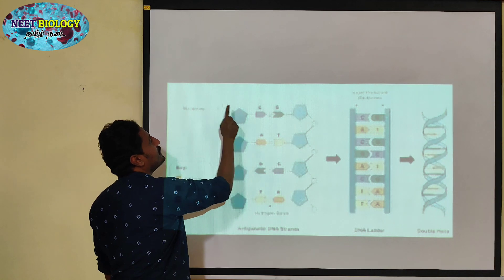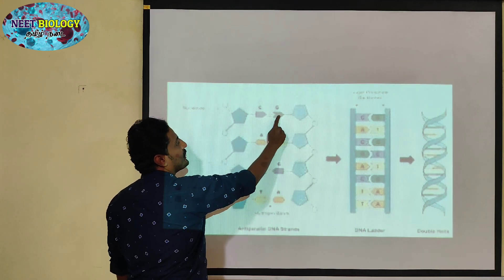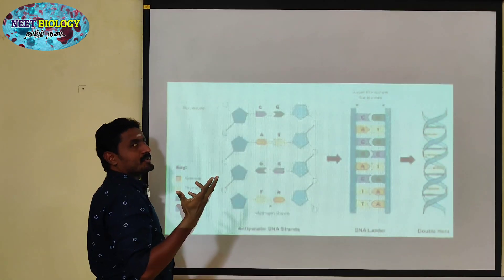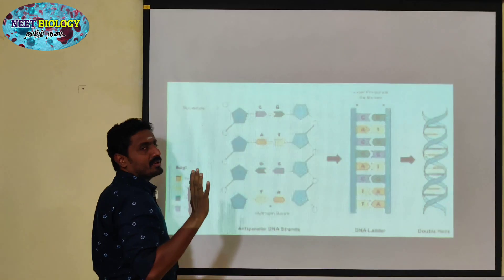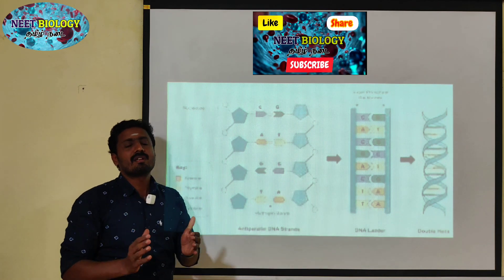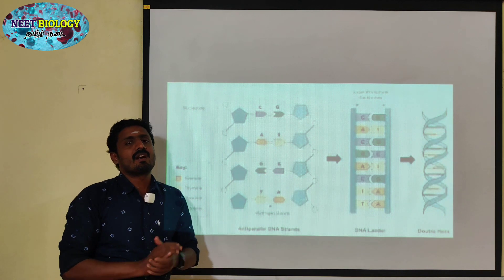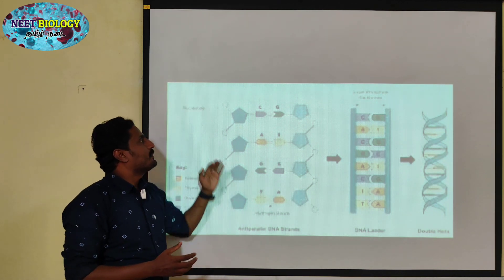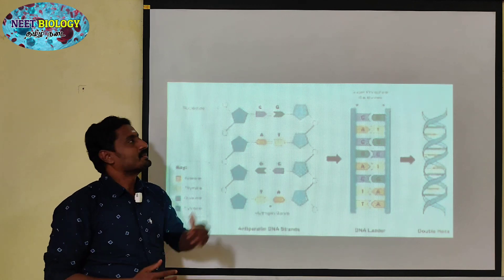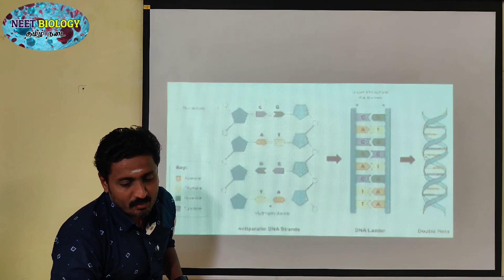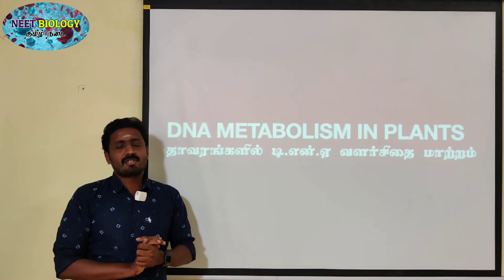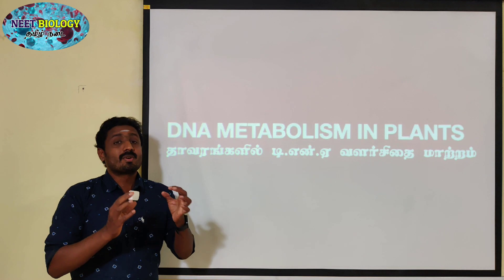A nucleotide is made up of a phosphate group, a sugar, and a nitrogen base. The combination of sugar and nitrogen base without the phosphate is called a nucleoside.